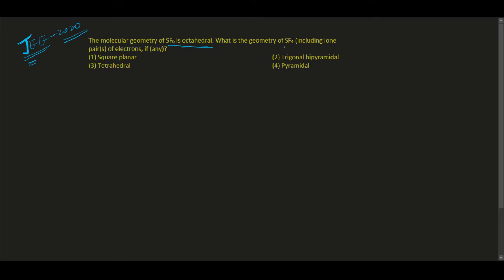What is the geometry of SF4 including lone pairs of electrons? Let's see how the geometry will be. SF4 will be... as we know that the number of electrons in the outermost shell of sulfur...